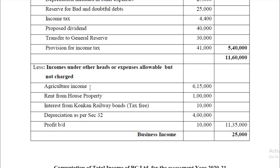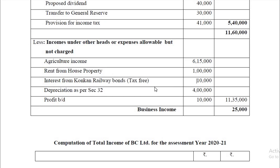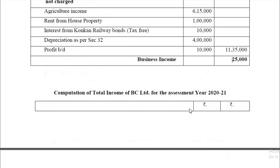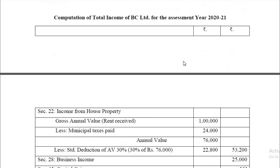Under deductions: agriculture income which is exempt and not taxable, rent from house property relating to another head, and interest from Concam Railway Bonds which is exempt — these are all deducted. Depreciation under Section 32 — 1 lakh on the first block and 3 lakh on the second block, totaling 4 lakh — is also deductible. Profit brought down from the last year is also deducted. Total deductions come to 11 lakh 35,000, so business income is 25,000.